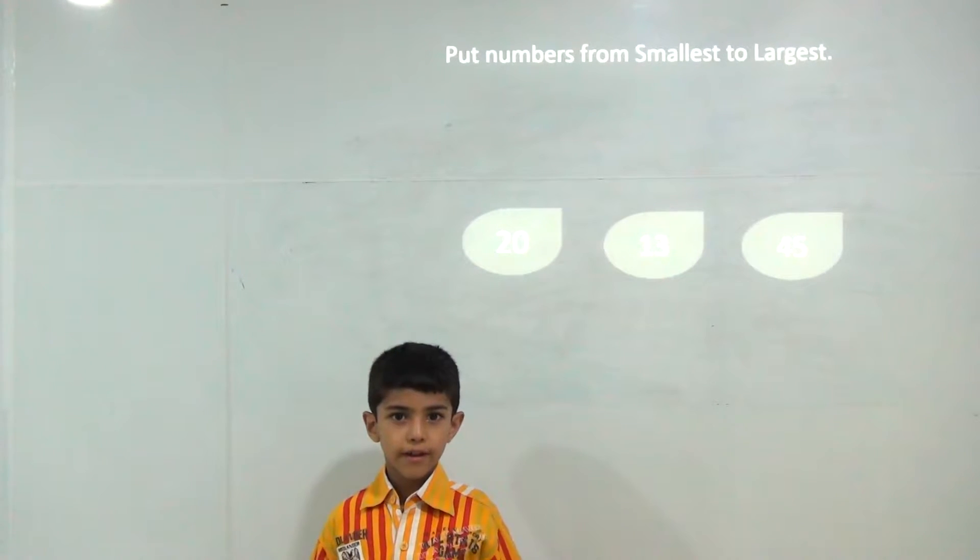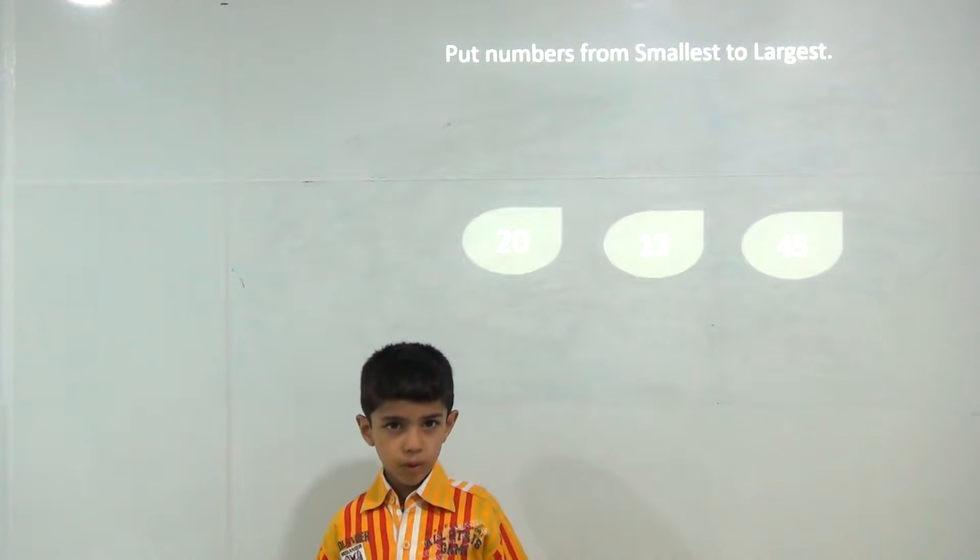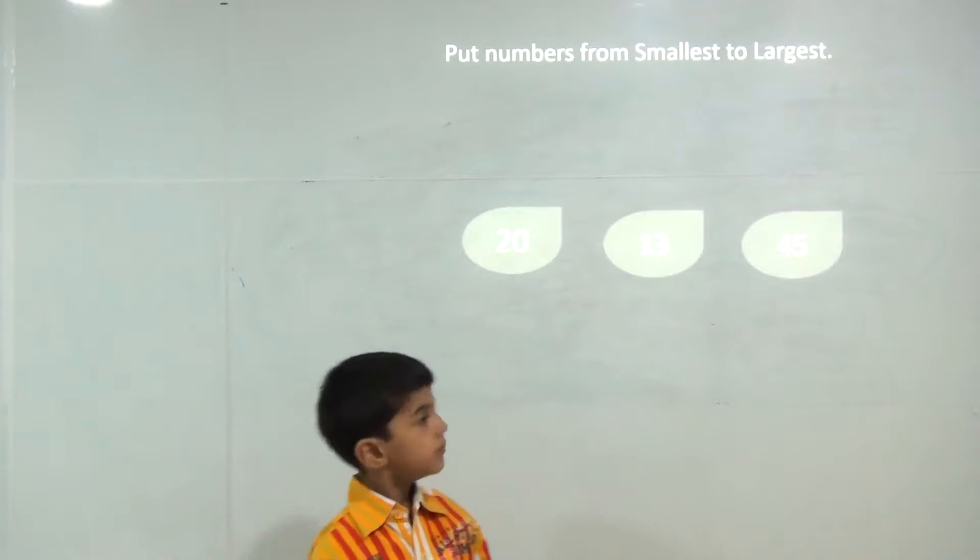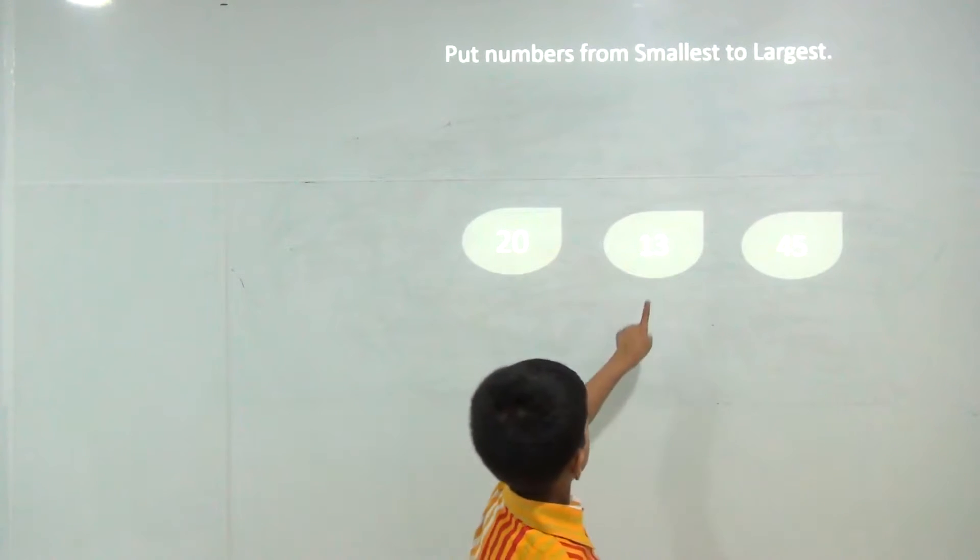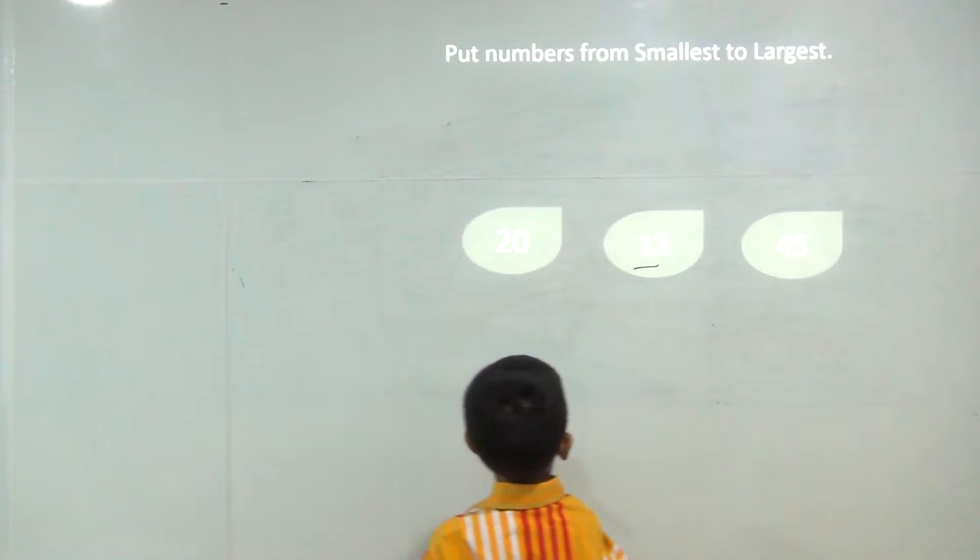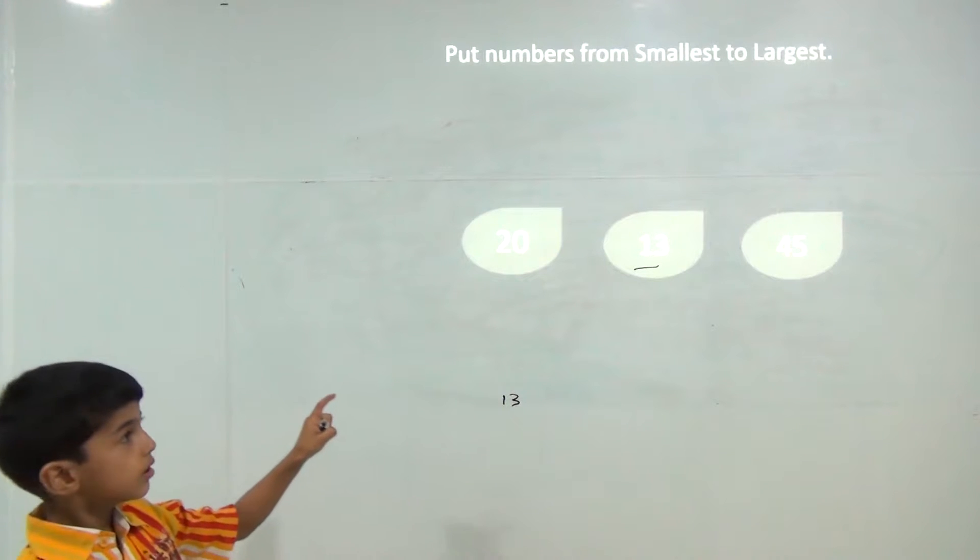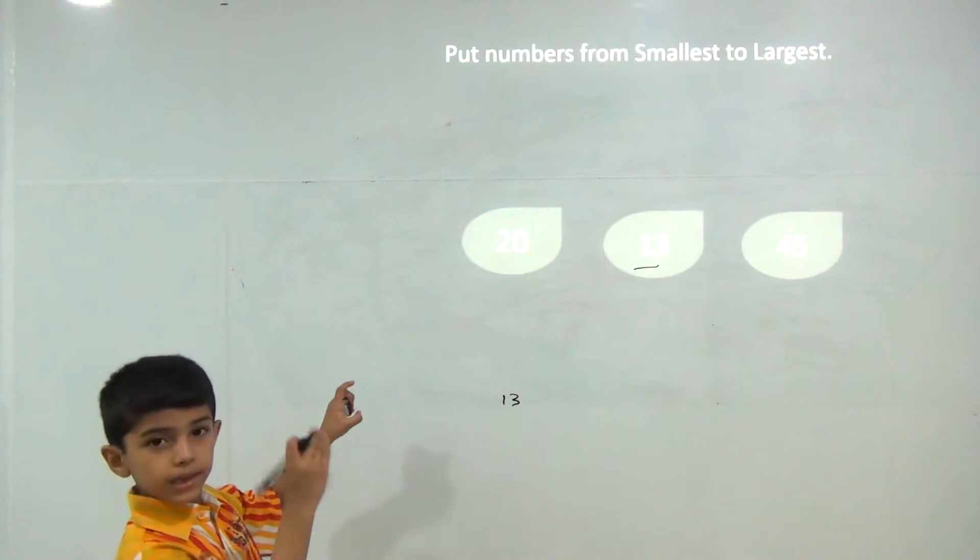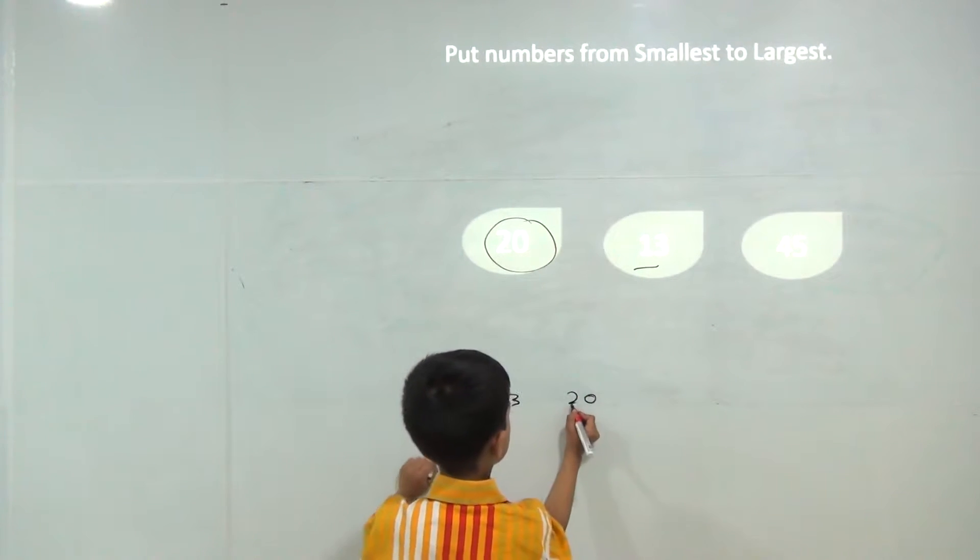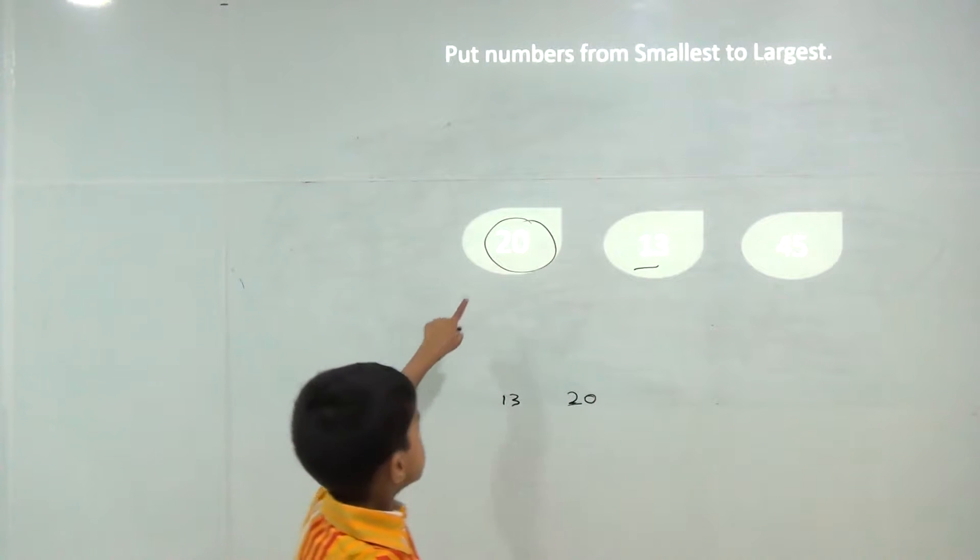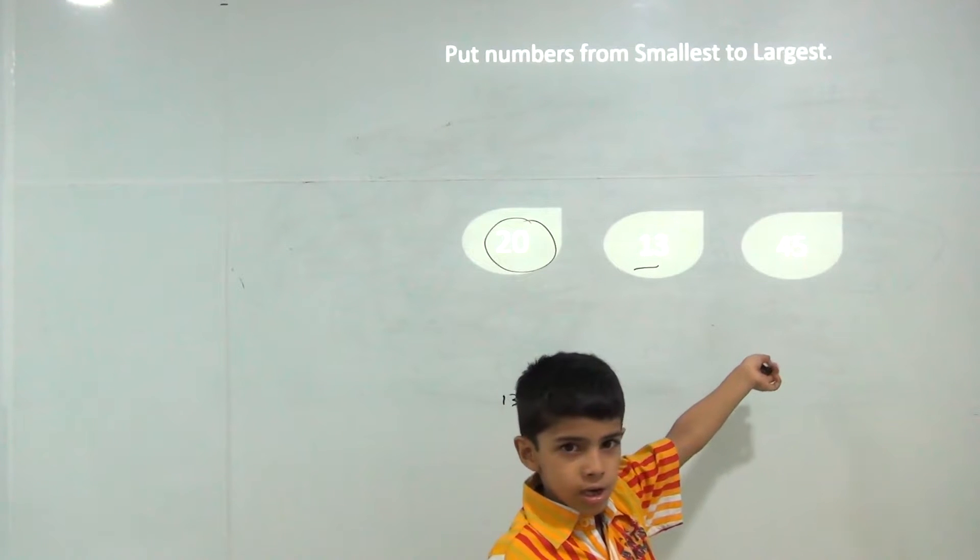Hello friends, today we will write greatest to smallest and smallest to greatest. The smallest number is 13, and bigger than 13 is 20, and bigger than 20 would be 45, because there are no more options.